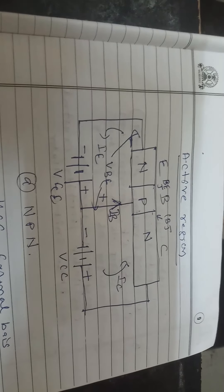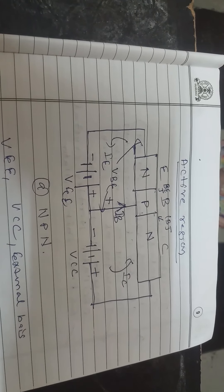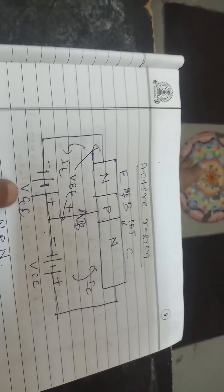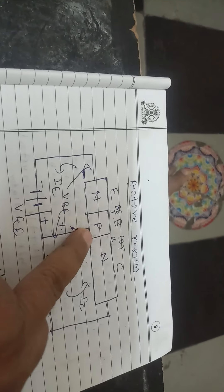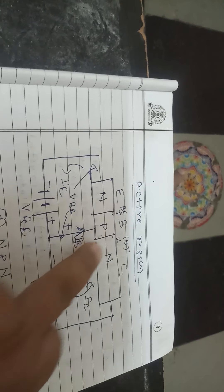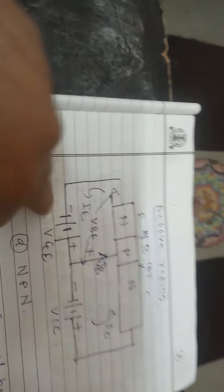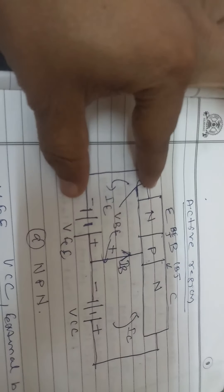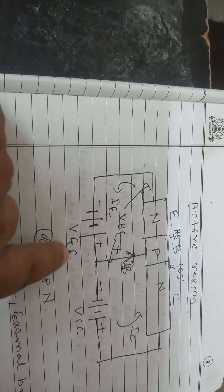Here you can see the circuit for the active region using the NPN transistor, which is widely used. We connect the N-type emitter to the negative terminal of the battery VEE. The negative terminal connects to the N-type emitter, and the positive terminal connects to the base, which is P-type. Since N connects to negative and the P connects to positive, this makes a forward bias.